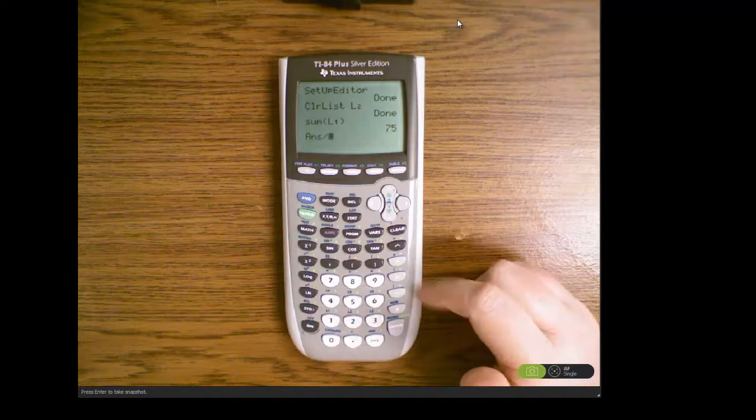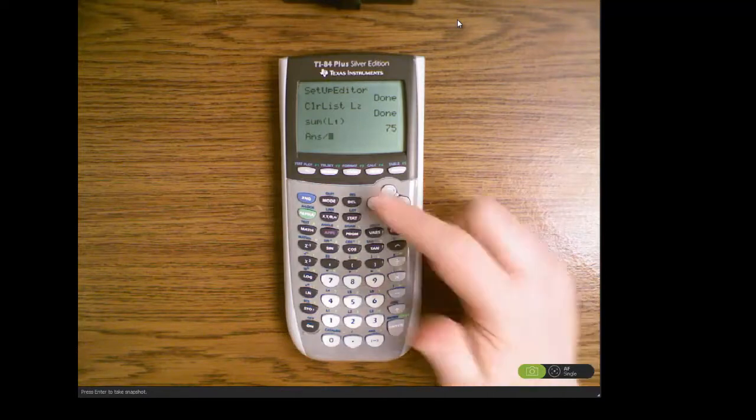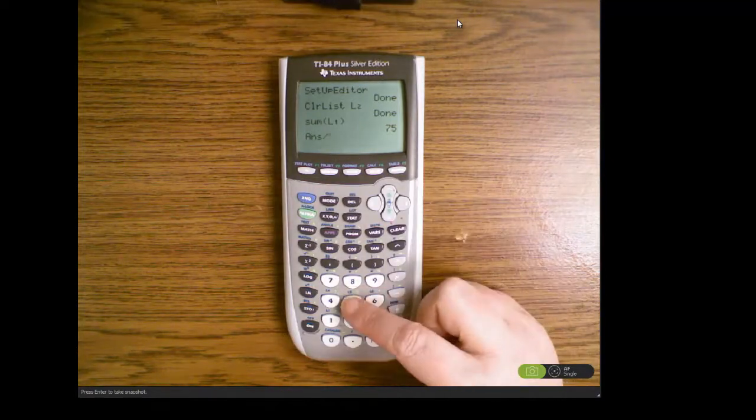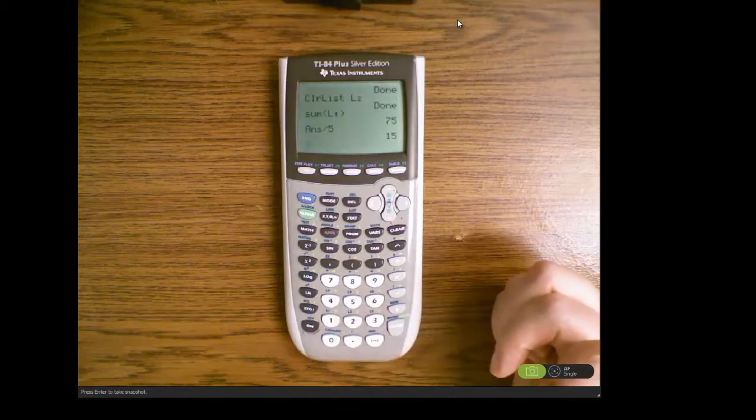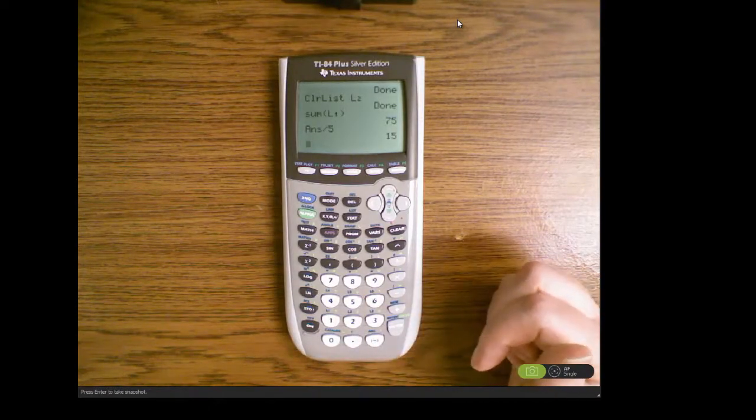We need to divide that by the number of values we have. So if I press the divide key that brings up the previous answer, then five. So if I divide that by five, that will give us the mean of fifteen.